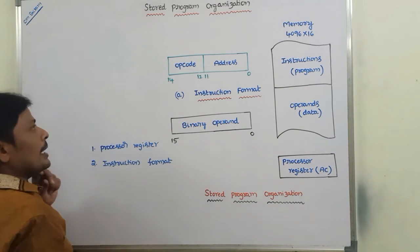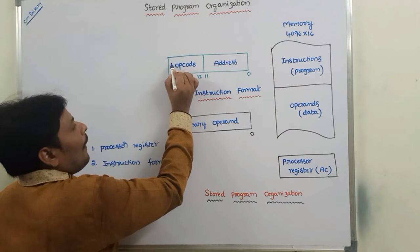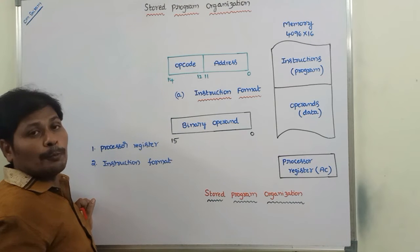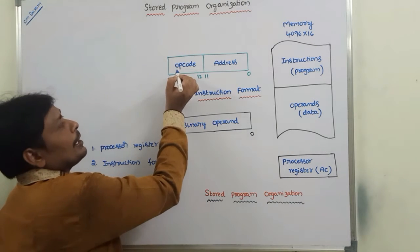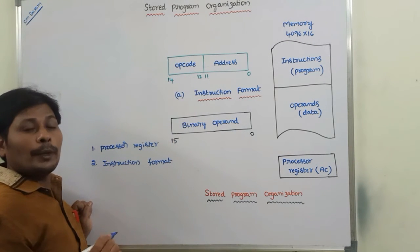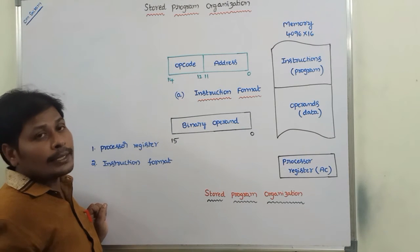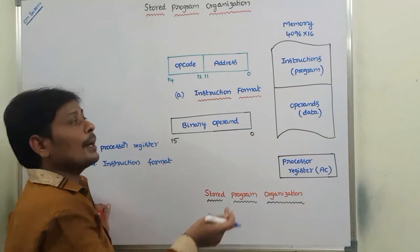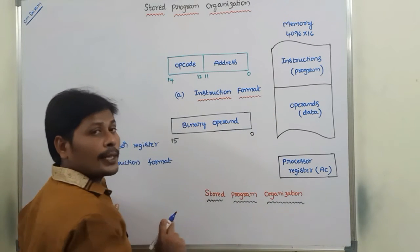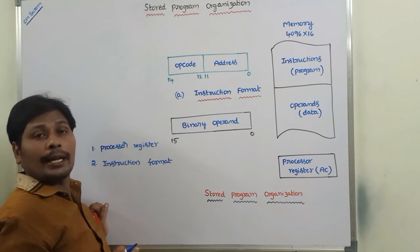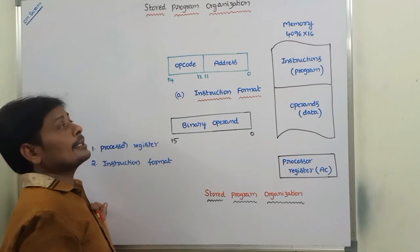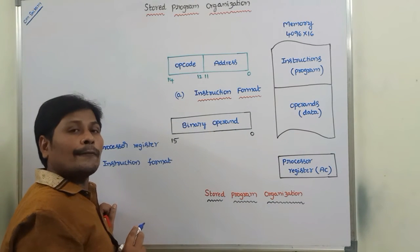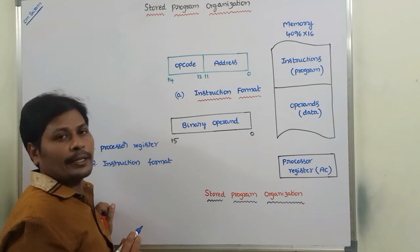The opcode specifies what operation is to be performed. To perform the operation, we require operands. These operands are stored in the memory or a processor register at a particular address. Those addresses are specified in the address part of the instruction format.